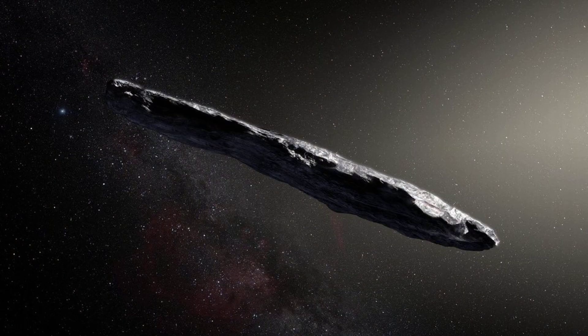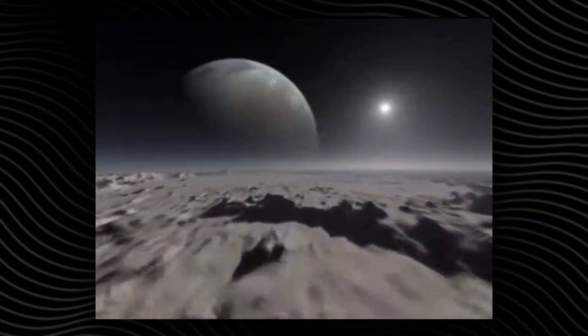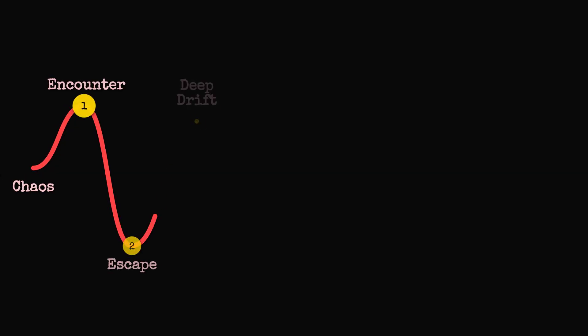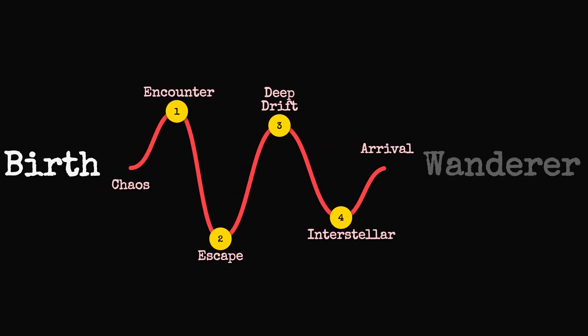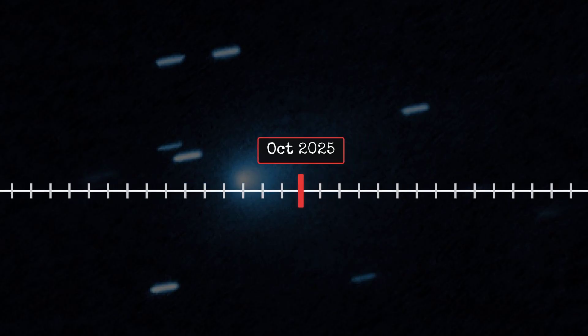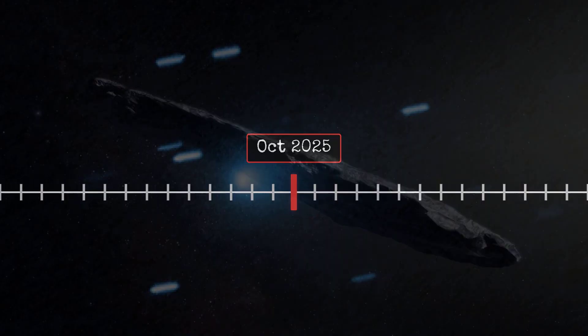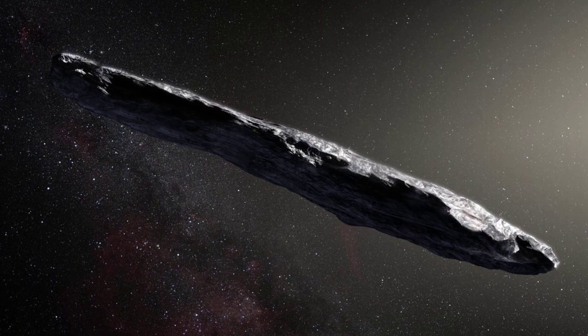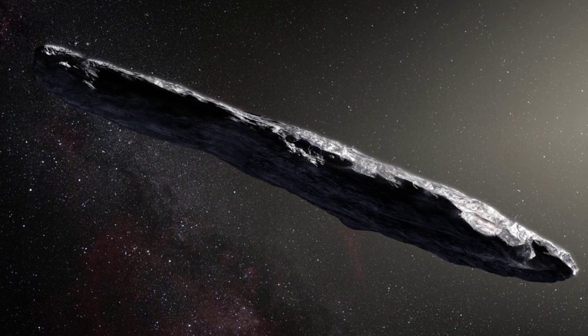But interstellar comets are true outsiders. Their origins lie in distant planetary systems, ejected by gravitational encounters and set adrift for billions of years. 3I-Atlas joined a list that, until a few years ago, had only one entry: 1I-Oumuamua in 2017, followed by 2I-Borisov in 2019. Each was a singular event, a cosmic message in a bottle from another star.